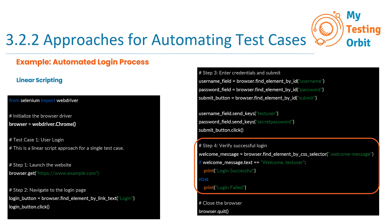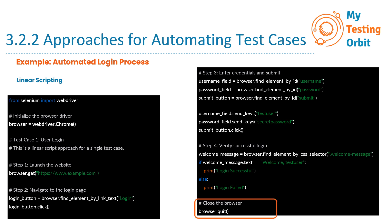In this step, the script locates an HTML element with a CSS selector 'welcome message', which displays a welcome message upon successful login. It checks the text content of this element and prints 'login successful' if the text matches 'welcome test user', otherwise it prints 'login failed'. Finally, after completing the interactions and verification, the script uses the quit method to close the web browser, ensuring proper cleanup of resources.